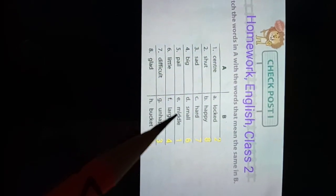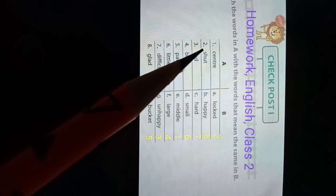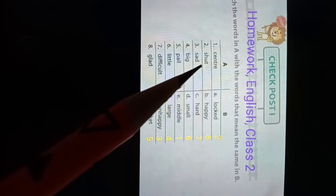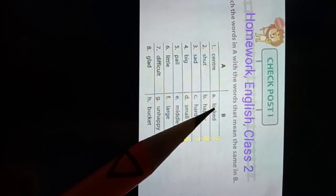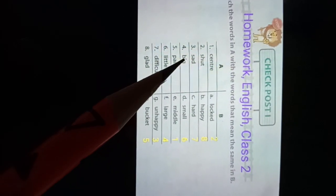Center means middle, number E. Number two: shut means locked. Number three: sad means unhappy. Number four: big is large.